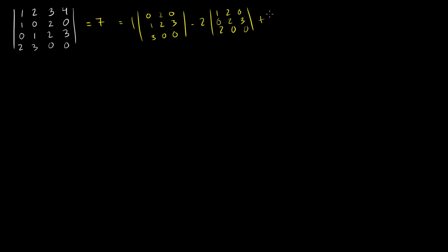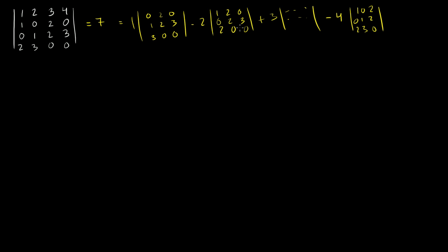Then plus 3 times its submatrix, and minus 4 times the determinant of the last submatrix — crossing out that row and column to get 1, 0, 2, 0, 1, 2, 2, 3, 0. That is a completely legitimate way to find a determinant, and that was our definition.